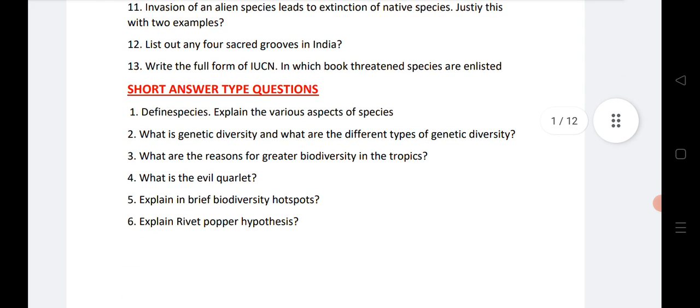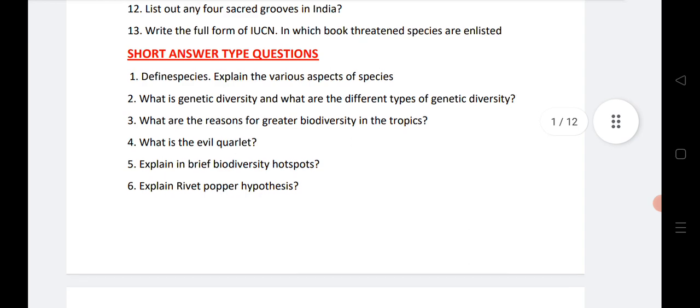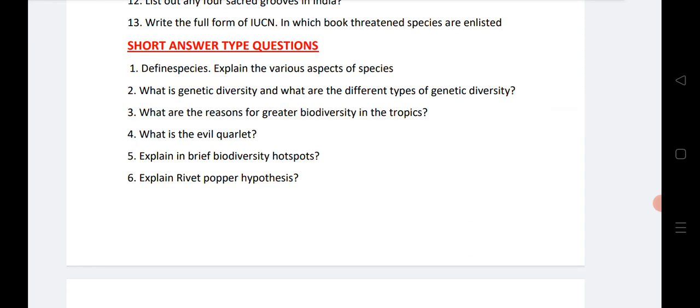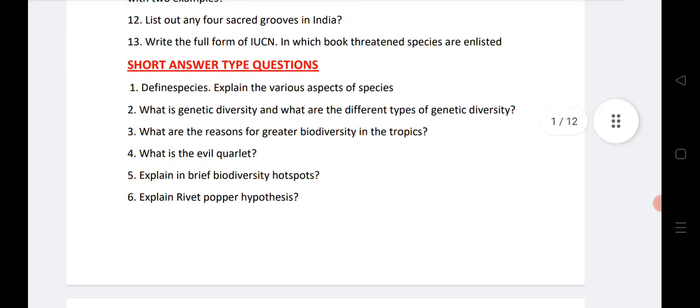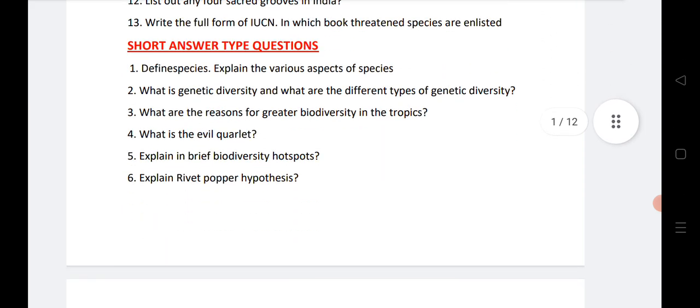This chapter you will get SAQs also. Important SAQs I have given here: define species, explain various aspects, genetic diversity, biodiversity, evil coordinate, brief diversity about hotspot, Rivet Popper Hypothesis. This is important question of the chapter Diversity of Living World.